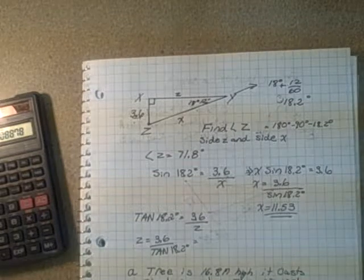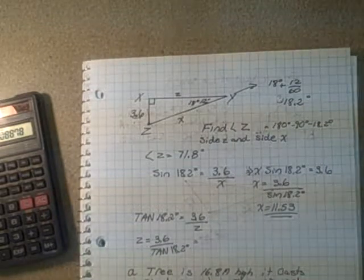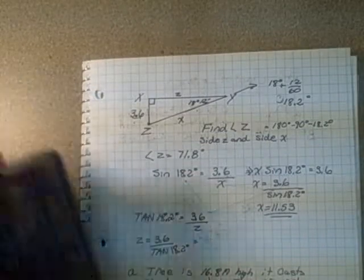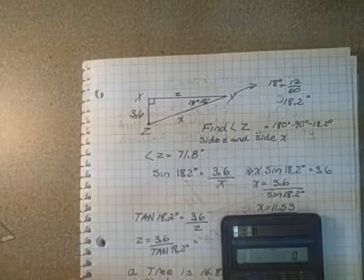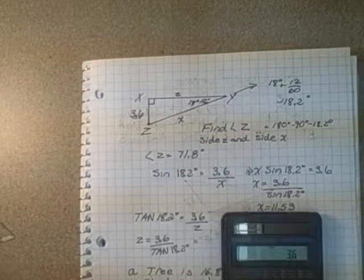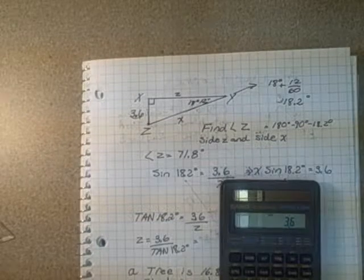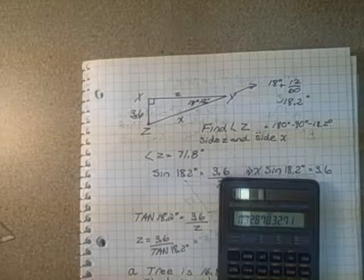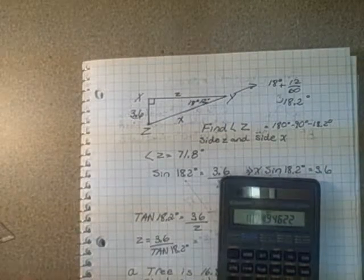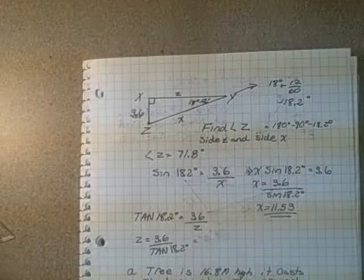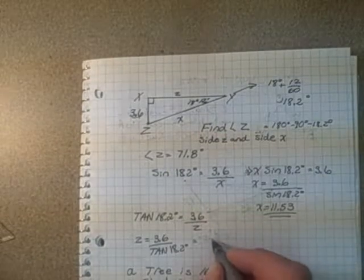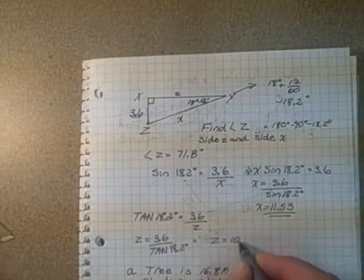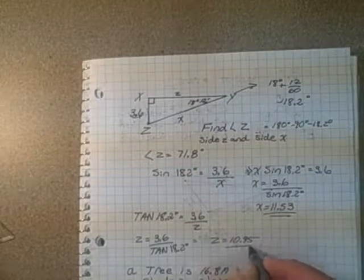And then we can plug that into our calculator. So I get 3.6 divided by 18.2 tangent, and I get 10.95. So Z equals 10.95. So there's my answers.